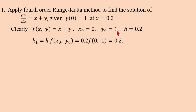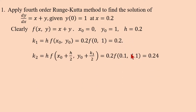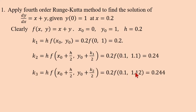Divide k1 by 2 and add y₀: y-value = 1.1, x-value = x₀ + h/2 = 0.1. So k2 = 0.2·f(0.1, 1.1) = 0.2·(0.1 + 1.1) = 0.24. Divide k2 by 2 and add y₀: y-value = 1.12, x-value = 0.1. So k3 = 0.2·(0.1 + 1.12) = 0.244.